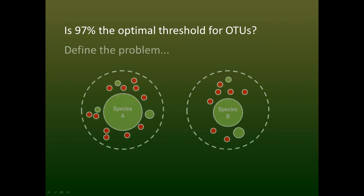First, we need to define the problem. There are two main goals with OTU clustering: bring different sequences from the same species together into a single cluster, and also bring bad sequences together with their correct sequences. I'm going to assume that sequences are correct and focus on the problem of bringing sequences from a single species together.